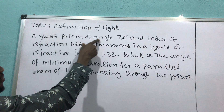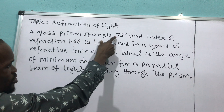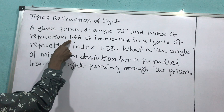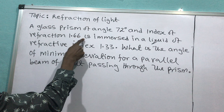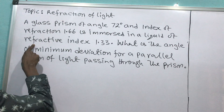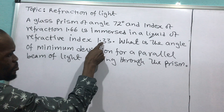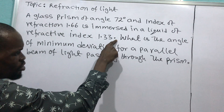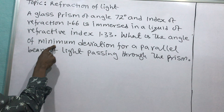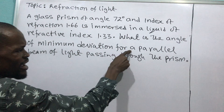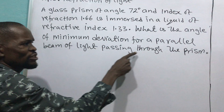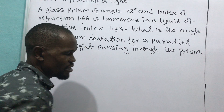A glass prism of angle 72 and index of refraction 1.66 is immersed in a liquid of refractive index 1.33. First up, what is the angle of minimum deviation for a parallel beam of light passing through the prism?